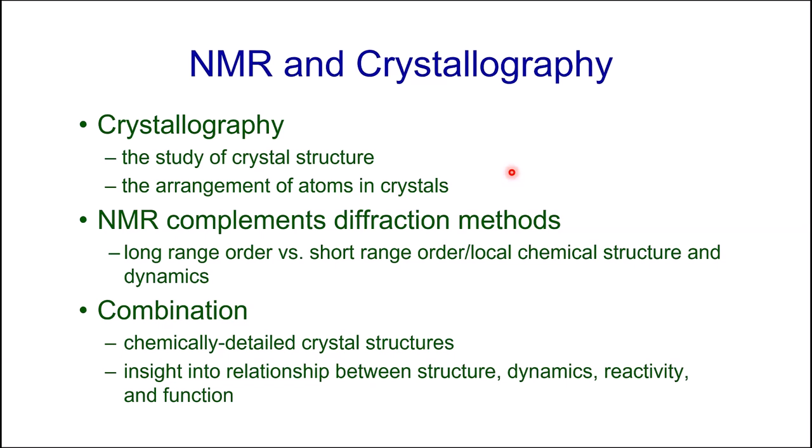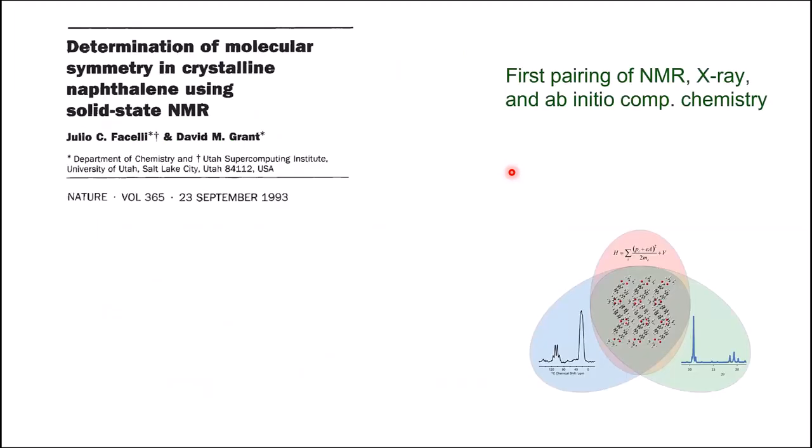NMR complements diffraction in several ways. Diffraction methods are great when there's long range order and can define that long range order, whereas NMR is very sensitive to local chemical structure. The combination of the two can give absolutely beautiful, chemically detailed crystal structures — and that's where I would claim we'll find the insight into the relationship between structure, dynamics, reactivity, and function.